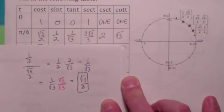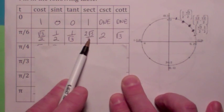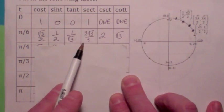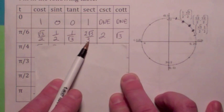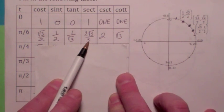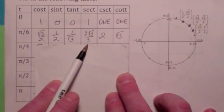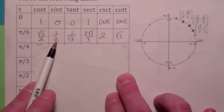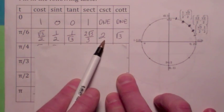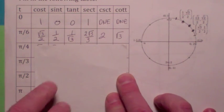The reciprocal of the cosine, which is secant, would be 2 over √3, and when you rationalize the denominator it becomes 2√3/3. The reciprocal of the sine is the cosecant, which is 2. And the reciprocal of the tangent is cotangent, which is √3.